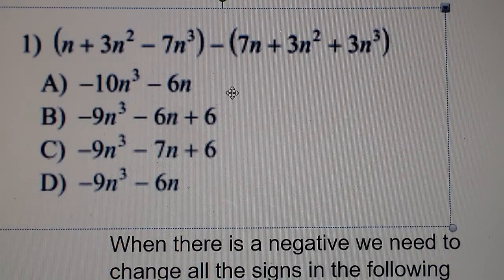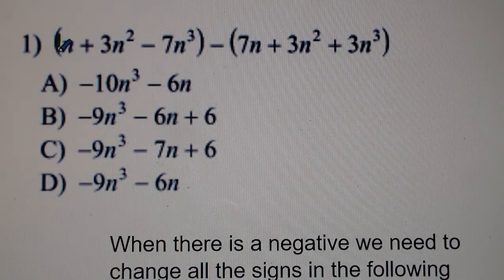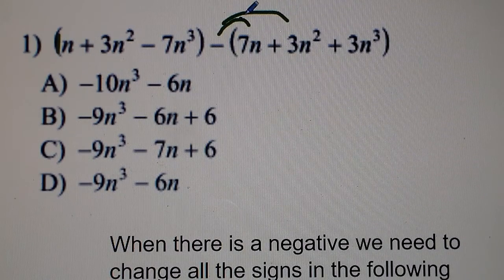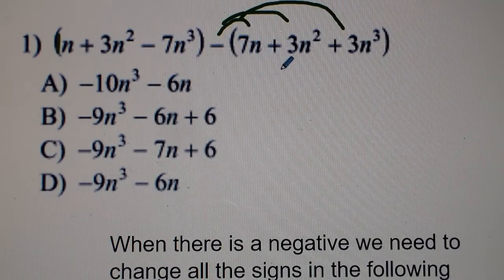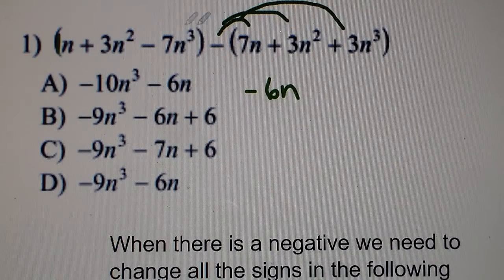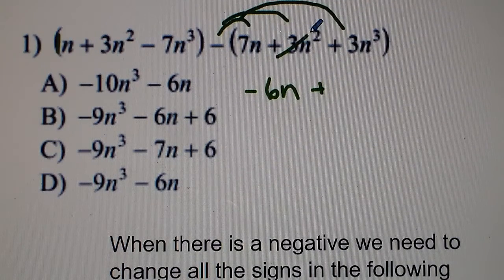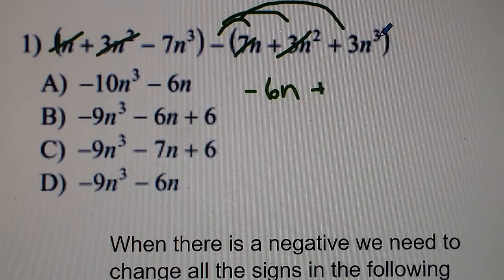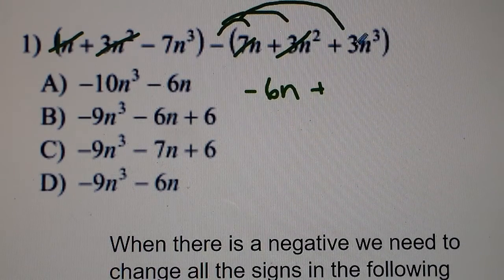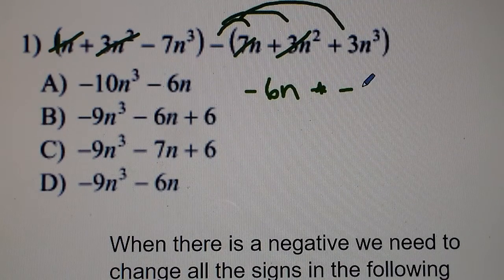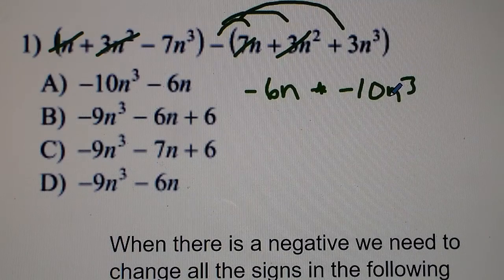Let's do a subtraction example. We have 1n + 3n² − 7n³, and we're subtracting (1n + 3n² + 3n³ + 7n). The negative sign changes all the signs in the second polynomial — so the positive 7n becomes negative 7n. Then 1n − 7n gives minus 6n. For n²: 3n² − 3n² gives 0, so we don't write anything for n². For n³: negative 7n³ minus positive 3n³ gives negative 10n³. So our answer is negative 6n minus 10n³.